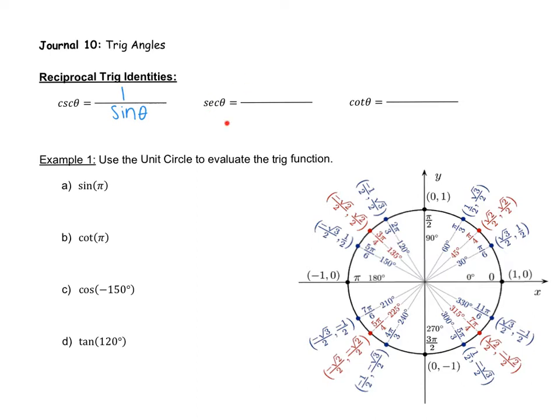For secant, we can write it as one over cosine, and for cotangent, it's one over tangent. This can be helpful later on when we're evaluating, and I'll show you later in this video.